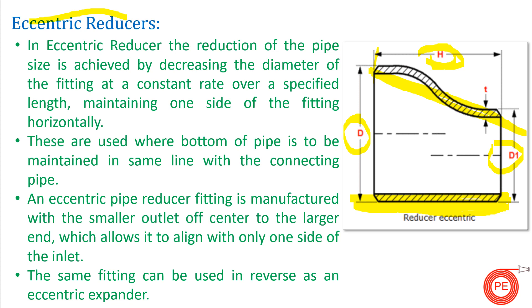Whenever we want to join two pipes that have different axes, we use eccentric reducers. An eccentric reducer is manufactured with the smaller outlet offset from the center of the large end, which allows it to align with only one side of the inlet. The same fitting can also be used as an eccentric expander.